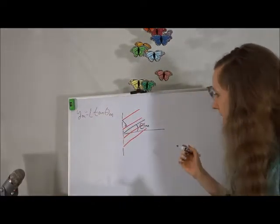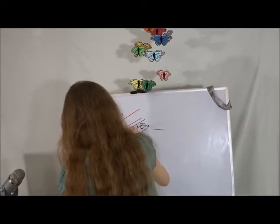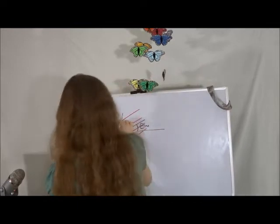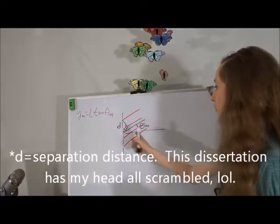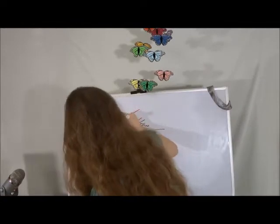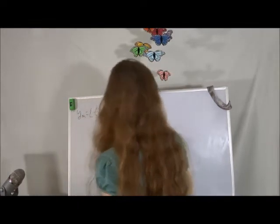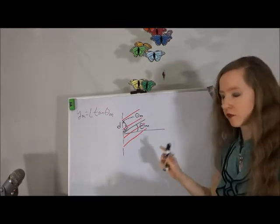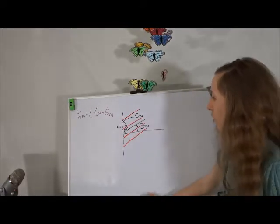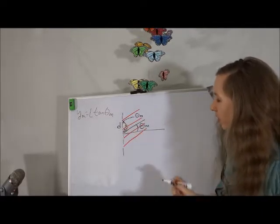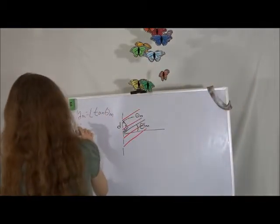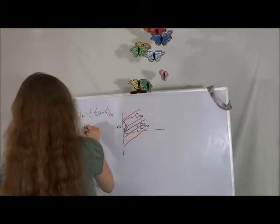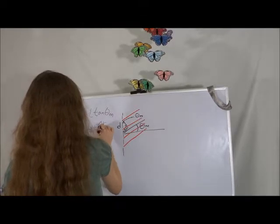These are going to have some path length difference, which we can use delta r to denote. There's going to be some d — some slit separation — there. If we want to figure out a relationship, we know this angle is also going to be theta_m, using the trick we did last time. The opposite side over hypotenuse gives us sine of theta_m is equal to delta r over d.